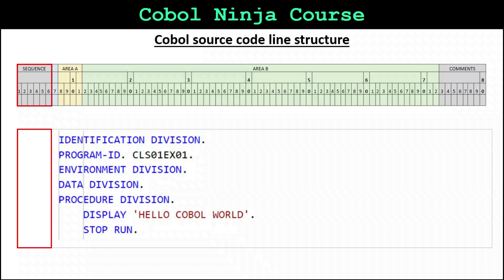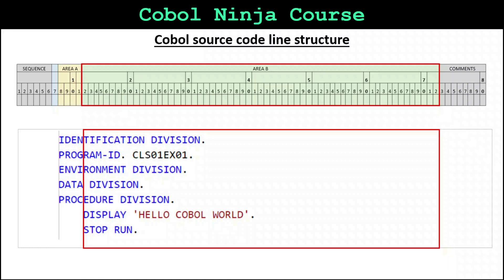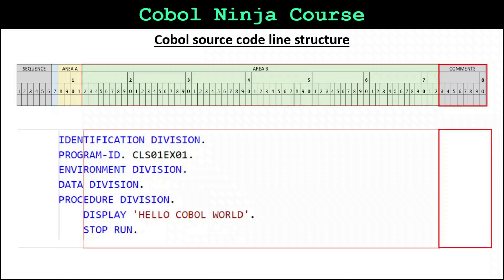Here we can see the first six characters from columns 1 through 6, column 7, columns 8 through 11, columns 12 through 72, and finally columns 73 through 80. Let's take a look at what that means.